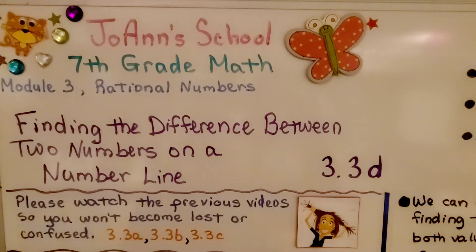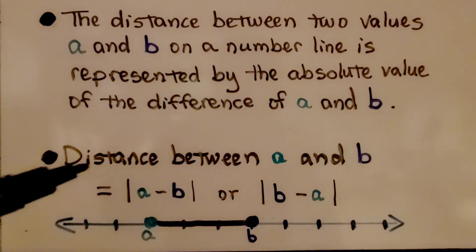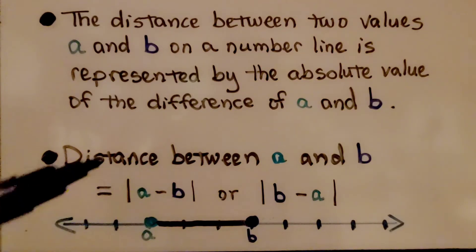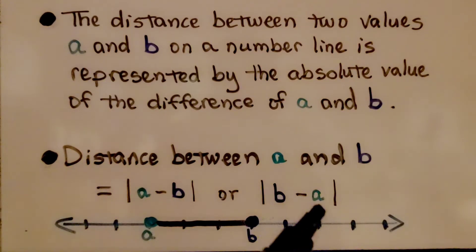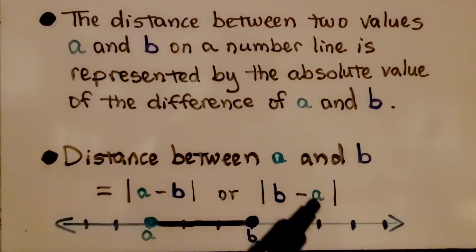We're now at lesson 3.3d. We're going to be finding the difference between two points on a number line. The distance between a and b is equal to the absolute value of a minus b, or the absolute value of b minus a.